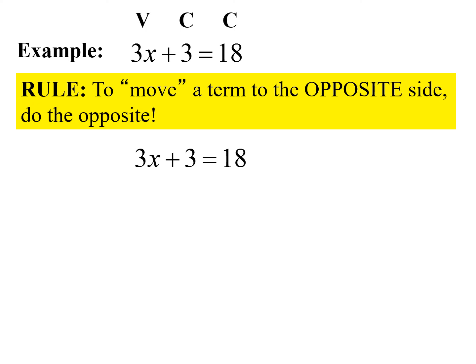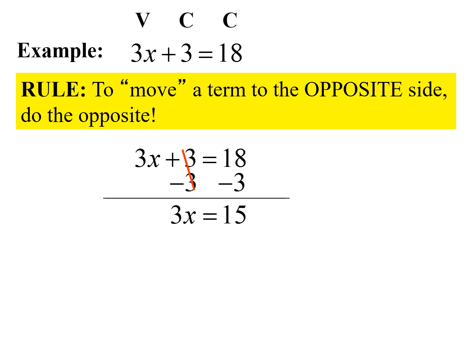As a rule, to move a term to the opposite side we do the opposite. Our equation is 3x plus 3 equals 18. I want to move the positive 3 to the right-hand side, so I subtract 3 from both sides. This is the subtraction property of equality — when we have an equal sign, we must do the same thing to both sides. Positive 3 minus 3 equals 0, so it cancels, leaving 3x on the left.